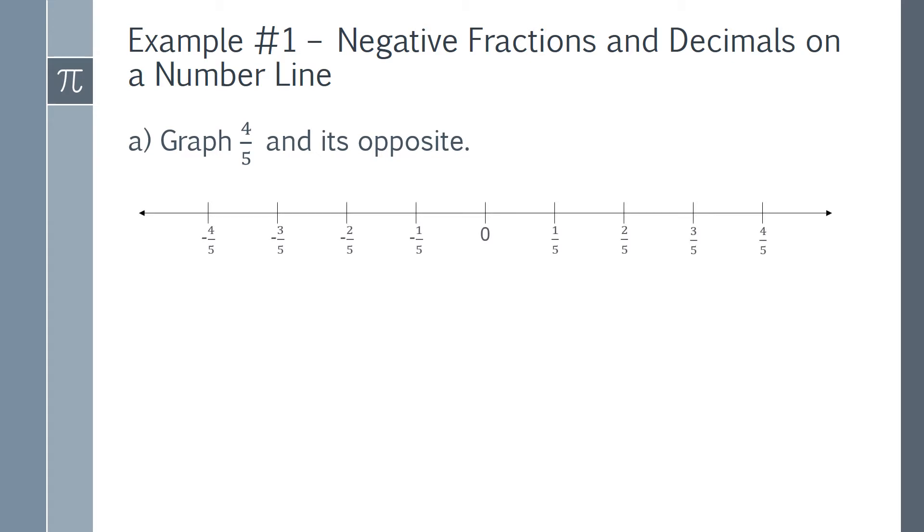We'll start by drawing our number line, and we have negative 4 fifths on the left to positive 4 fifths on the right. The first point that we need to graph is 4 fifths. The opposite of 4 fifths is negative 4 fifths, so we'll graph that point, and now we're done with this problem.